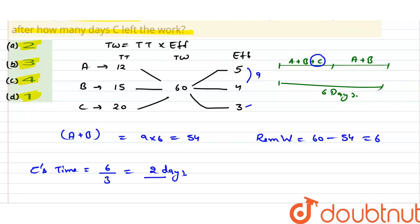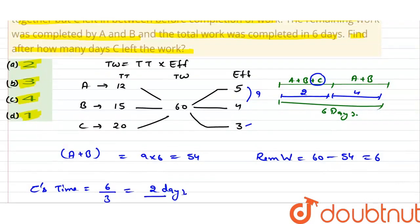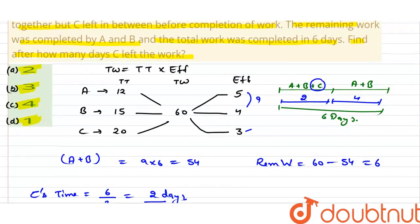तो 2 दिन मतलब C ने 2 दिन काम किया, और A और B ने 6 दिन किया। तो C, 2 दिन बाद left करके गया। हमसे पूछा गया है कि C कितने दिन बाद left करके गया — तो answer है 2 दिन।